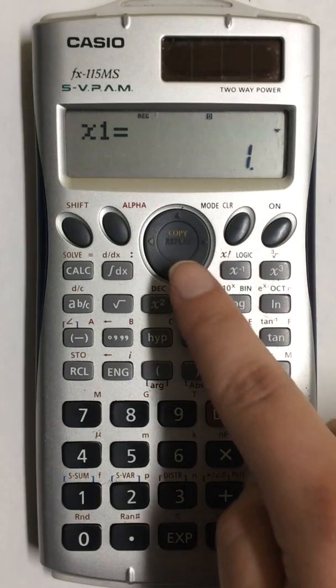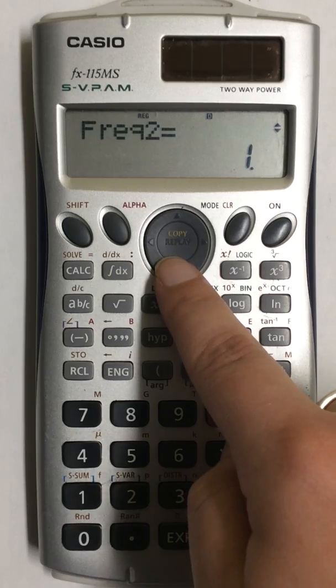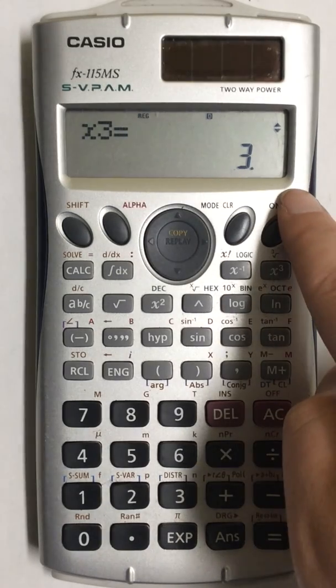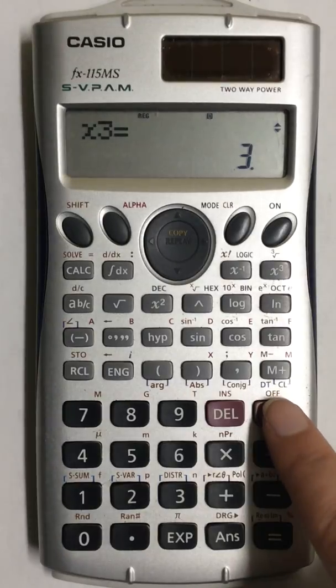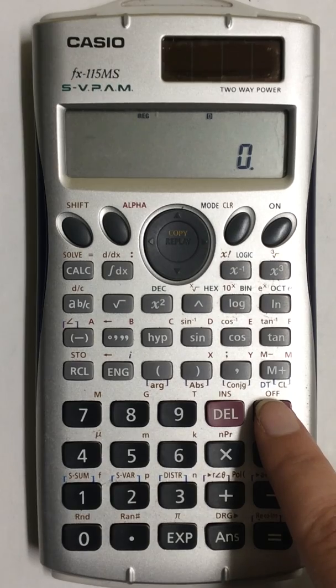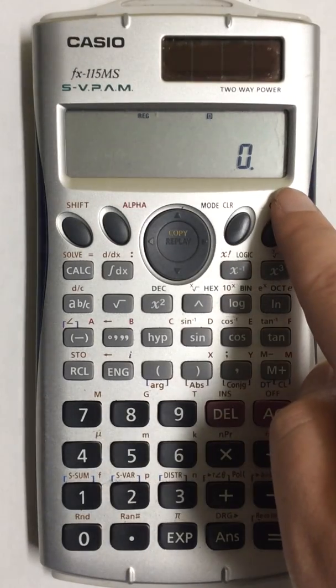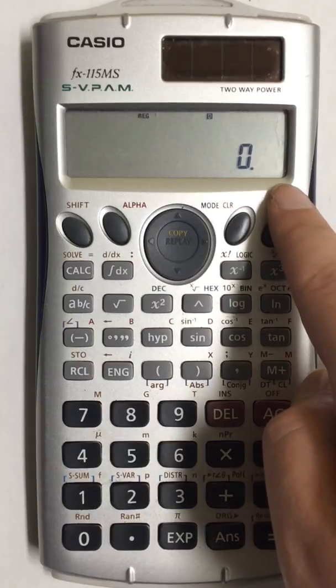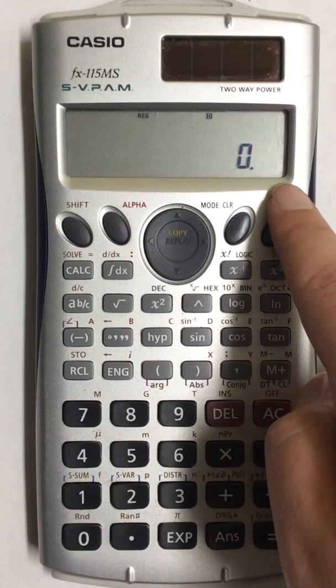I already have values entered into my calculator, so to begin I'm first going to clear my screen. To do that I'm going to press the AC button. If you try to find the correlation coefficient with numbers already showing on your screen, it will enter that value into your data list and change the values you already entered, which you don't want.